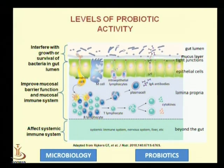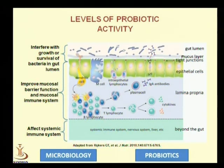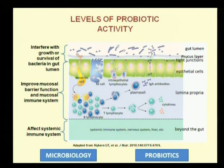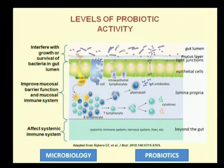The third level of probiotic action is affecting the systemic immune system. Here, activated blood cells pass from the submucosa or lamina propria to the surrounding lymph nodes, where they activate further blood cells. These activated blood cells then pass into the blood, enhancing the systemic immune system.